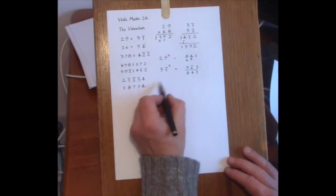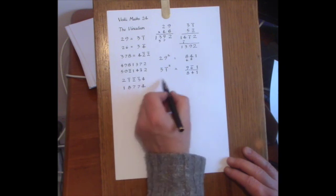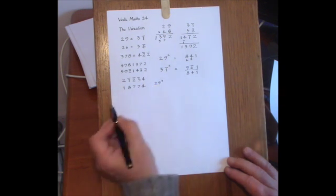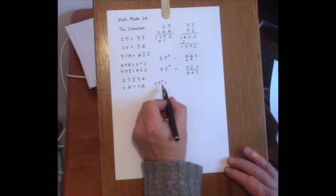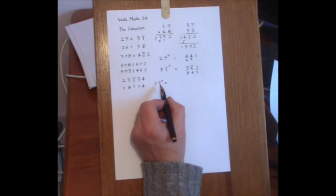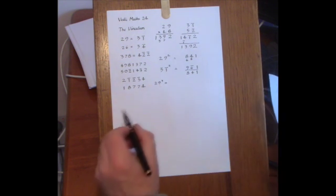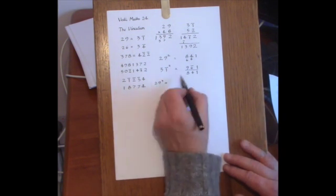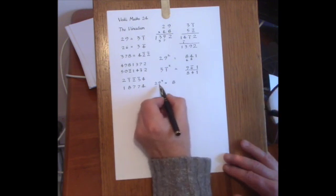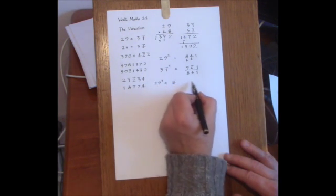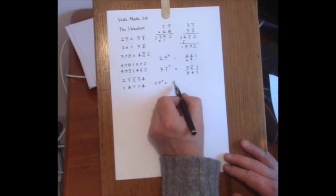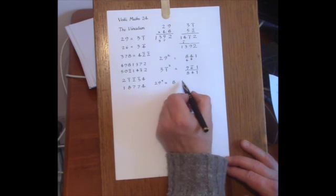And again, let's suppose now that we want to cube 29 using the proportionately method, with just using the positive numbers. This turns out to be quite awkward. So we'll be looking at putting down the cube of 2, which is 8, and then using the ratio 2 to 9 to get the sequence. So applying the ratio 2 to 9 to 8, we can half 8 and then multiply by 9, giving 36.